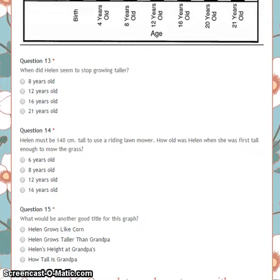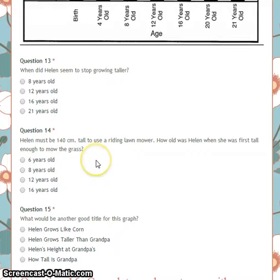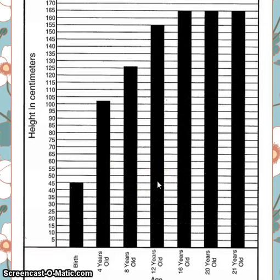Question 14. Helen must be 140 centimeters tall to use a riding lawnmower. How old was Helen when she was first tall enough to mow the grass? Was it 6 years old, 8 years old, 12 years old, or 16 years old?